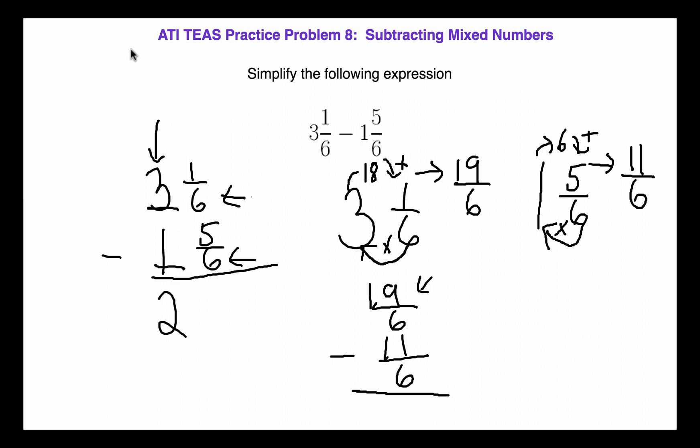Why don't you need them? Because once you change them to improper fractions, the three and the one got absorbed in this process. We use this clockwise process, so we don't need the three and the one. All we need is our 19 over six and our 11 over six.